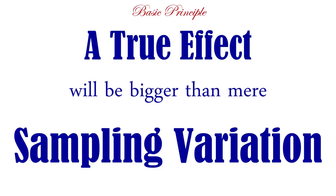In order for us to conclude that it's a true effect, it needs to be bigger than mere sampling variation. That's how we know how big things are, that's how we calculate p-values. We're taking the difference between our means and comparing that to the difference we expect to happen on average just from random sampling from the population. If the difference between means in our sample is the same size as, or smaller than, what we'd expect by random sampling variation, then we have no confidence that it wasn't just a fluke.